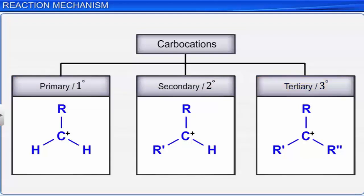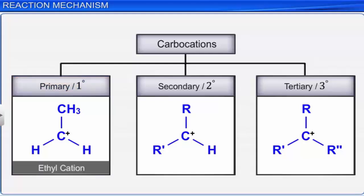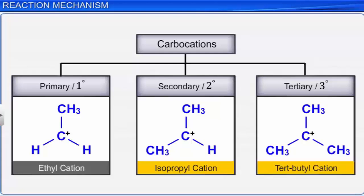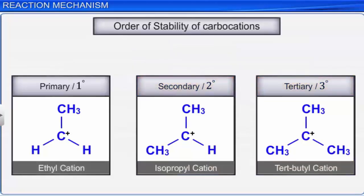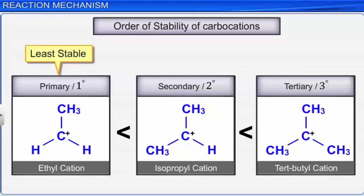For example, ethyl cation is a primary carbocation, while isopropyl carbocation and tert-butyl carbocation are secondary and tertiary carbocations respectively. Stability of carbocations increases with increase in number of alkyl groups bonded to the carbocation. Hence, primary carbocations are highly unstable, while tertiary carbocations are the most stable.